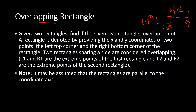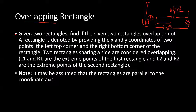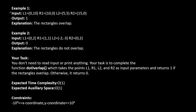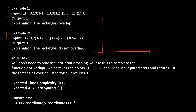It may be assumed that the rectangles are parallel to the coordinate axis. Let's understand the question better with the help of examples. Let's take the axis so that we can draw the rectangles. For the first rectangle, L1 is (0, 10) — let's suppose L1 is somewhere here — and R1 is (10, 0), so let's suppose R1 is somewhere here. This will be our first rectangle with L1 at (0, 10) and R1 at (10, 0).